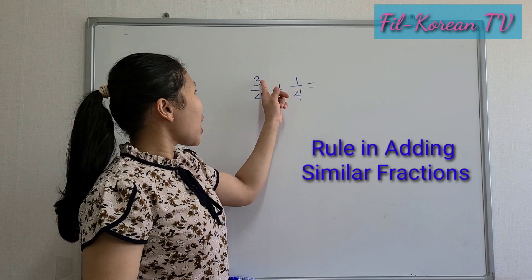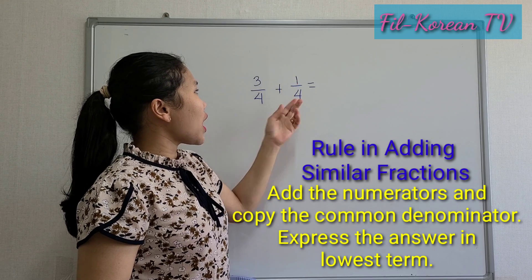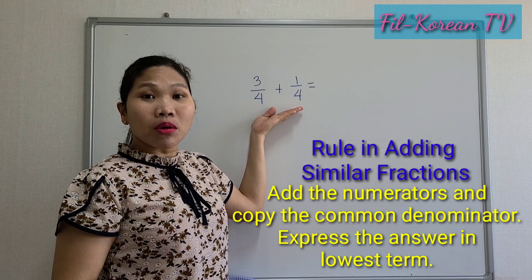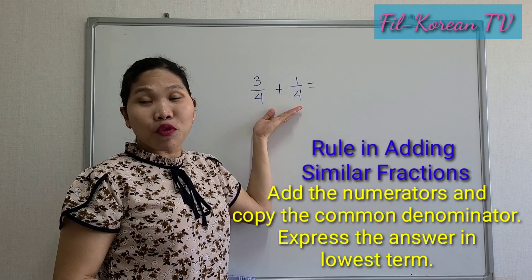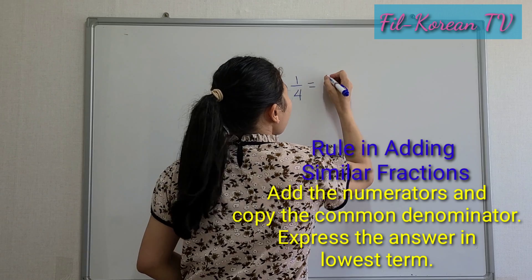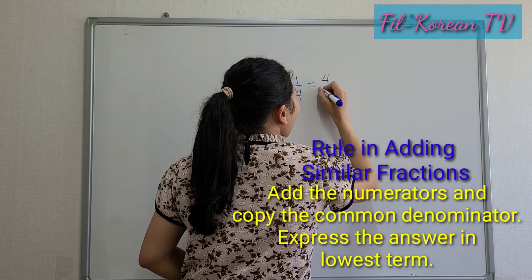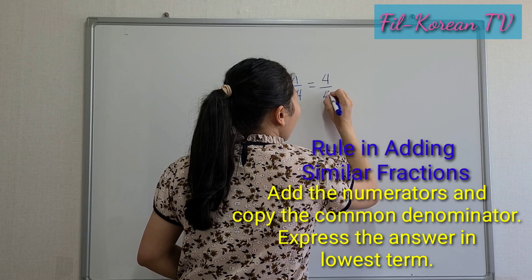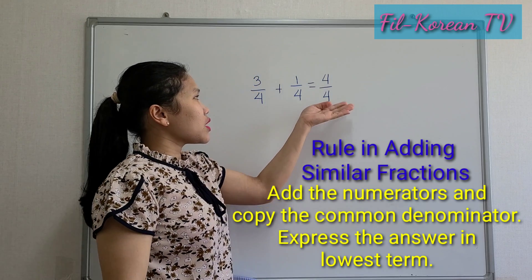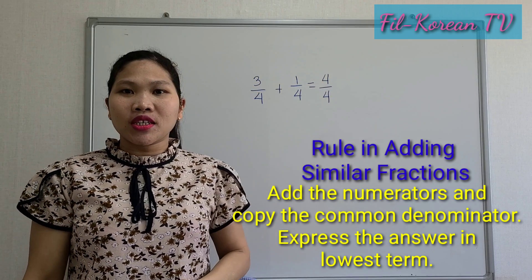We will add the numerators and copy the common denominator which is four. Three plus one is four, and the common denominator is four. The answer is four-fourths.